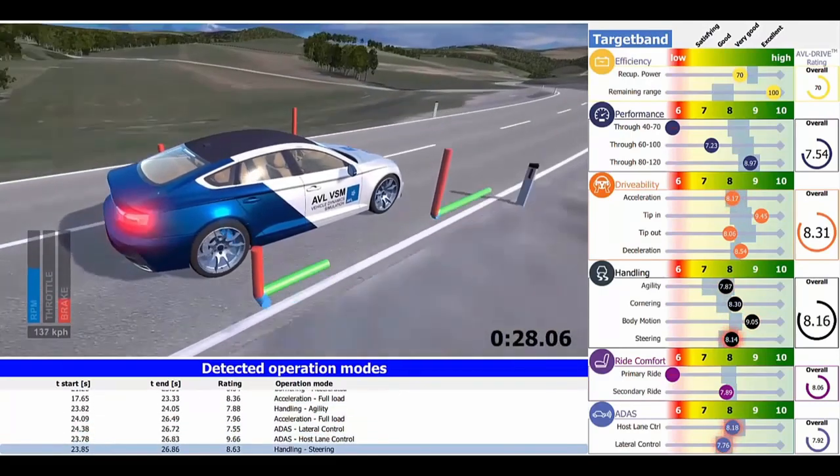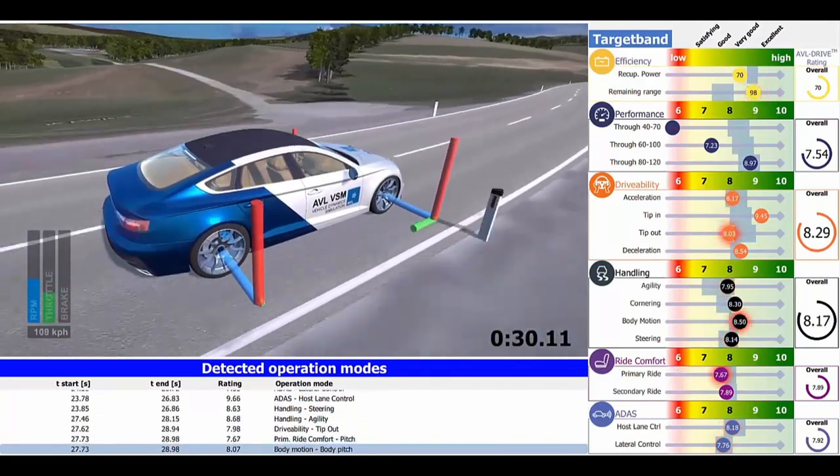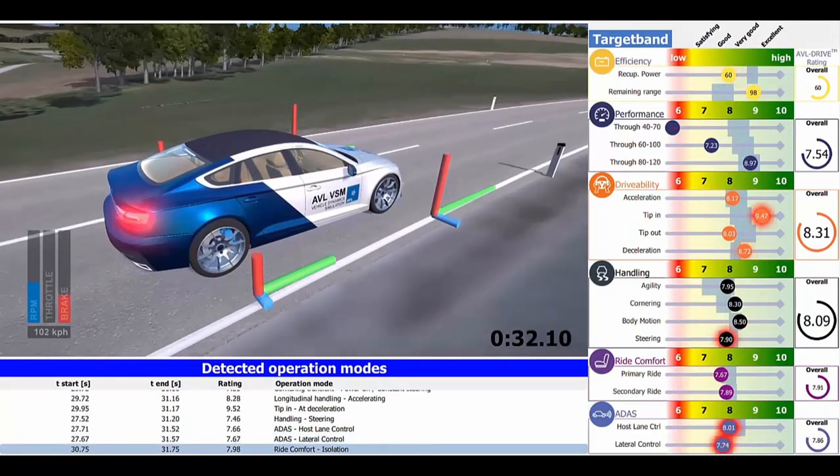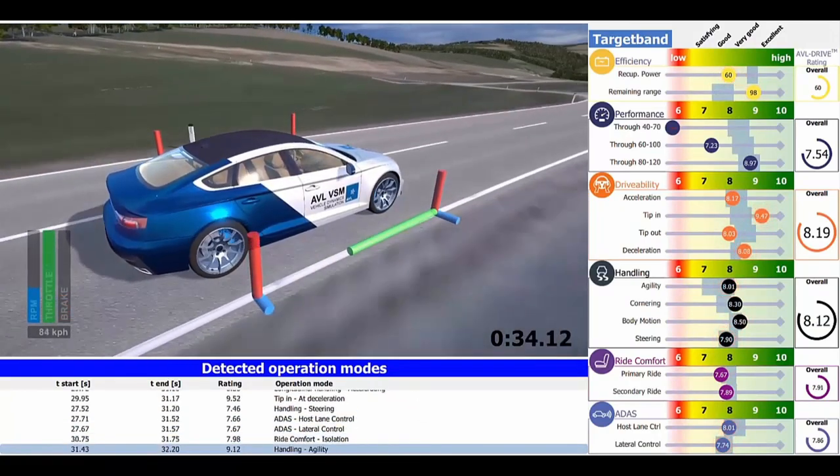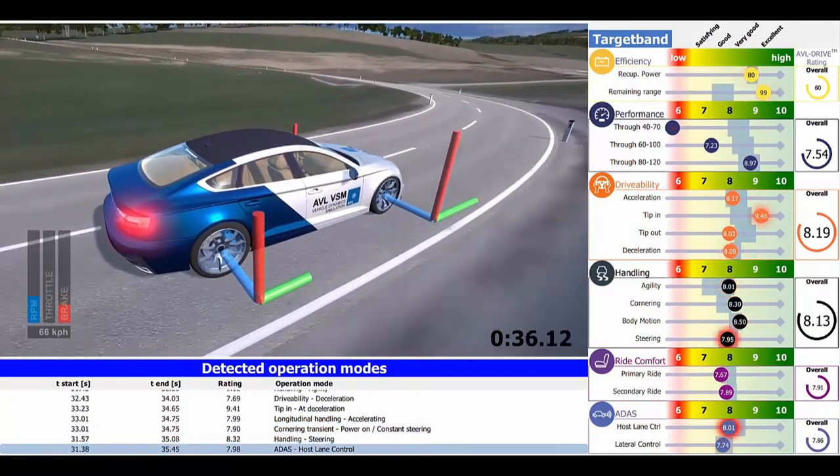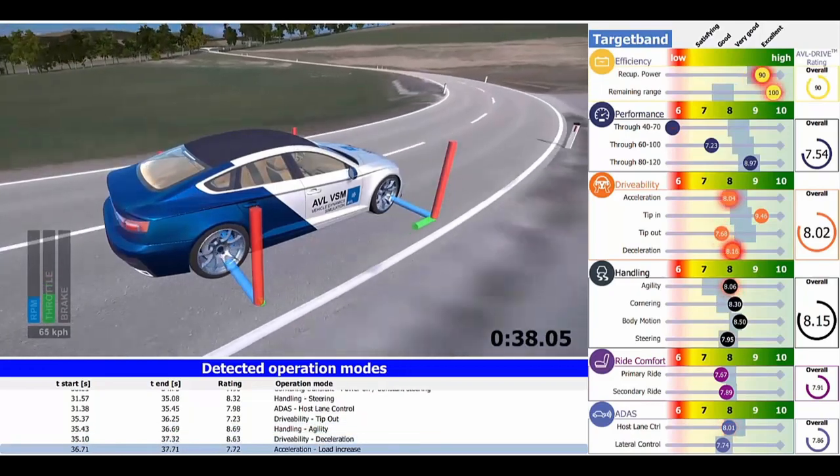How will the driver feel when driving the car? What will the handling and performance be like? How emotionally engaging will their experience be? By combining the products AVL VSM and AVL Drive, OEMs are offered a clear image of the final vehicle before it has been built.